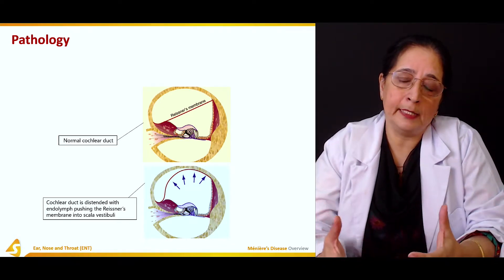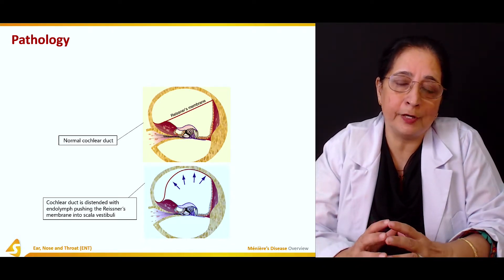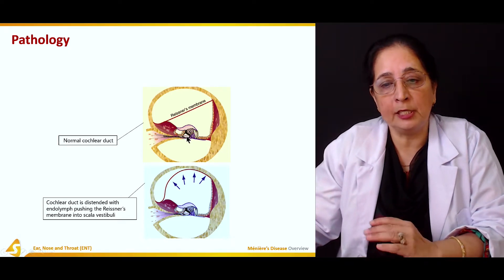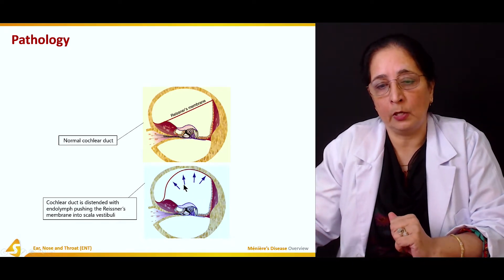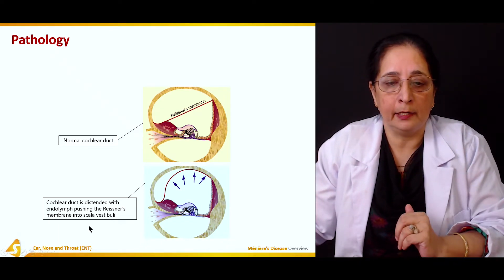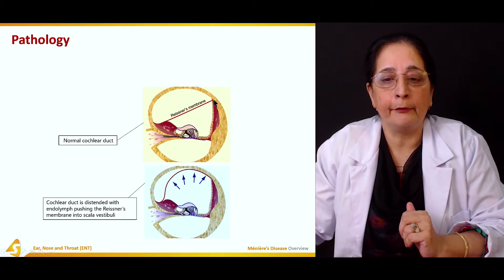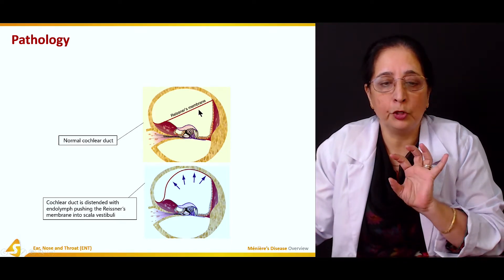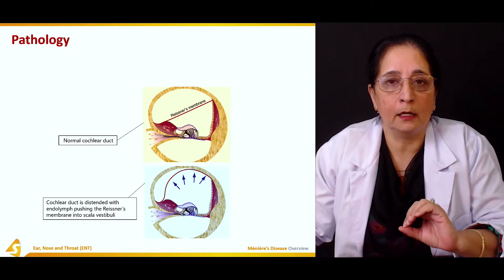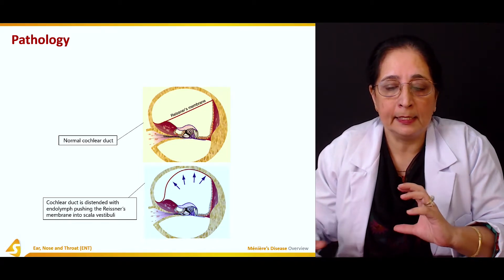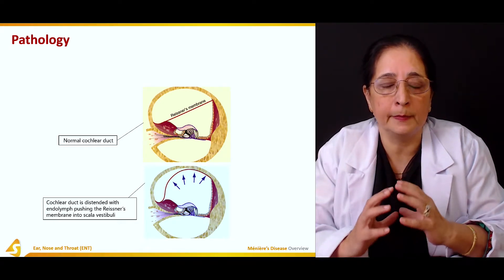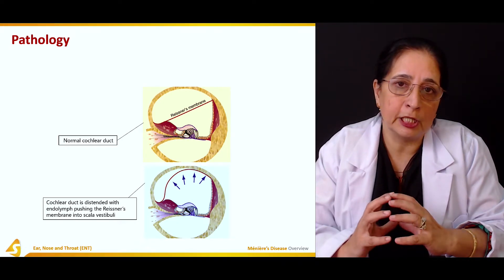Regarding pathology: as mentioned, there is an increase in endolymph. When there is an increase in endolymph, it can cause pressure within the endolymphatic system and this increased endolymph is pushed into the scala vestibuli, causing problems like vertigo, tinnitus, and hearing loss.